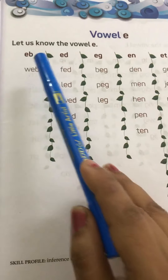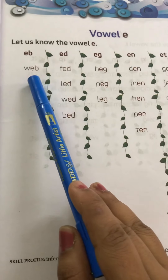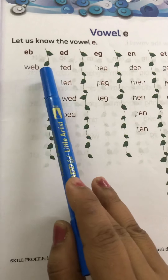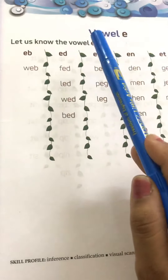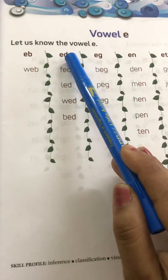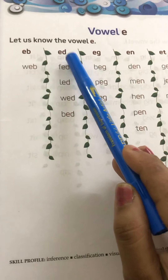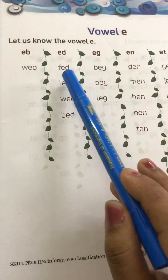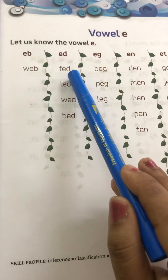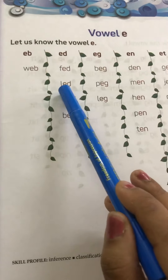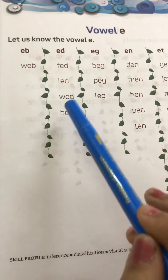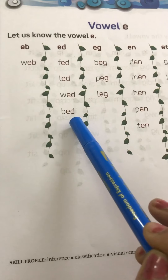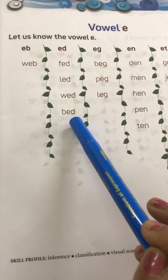E, B — Eb. And the word that ends with Eb is Web. W, Eb, Web. Now Ed. E, D — Ed. And the words that end with Ed: F, Ed — Fed. L, Ed — Led. W, Ed — Wed. B, Ed — Bed.